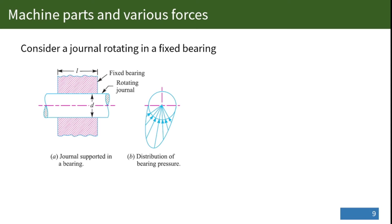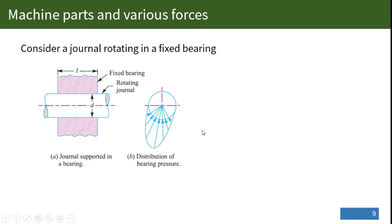As shown in this figure, consider a journal rotating in a fixed bearing. The journal exerts a bearing pressure on the curved surface of the brasses immediately below it. These are our brasses and these are the curved surfaces. The distribution of this bearing pressure will not be uniform, but will be in accordance with the shape of the surface in contact and the formation characteristics of the two materials.